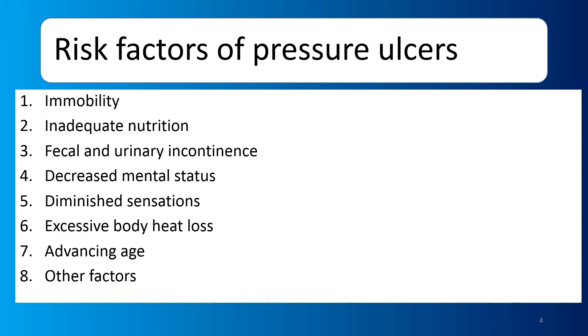Now we have a list of risk factors of pressure ulcers. First of all, we have immobility. Immobility is a key way to develop pressure ulcers. When a patient does not have mobility or movement, pressure builds up on body areas.